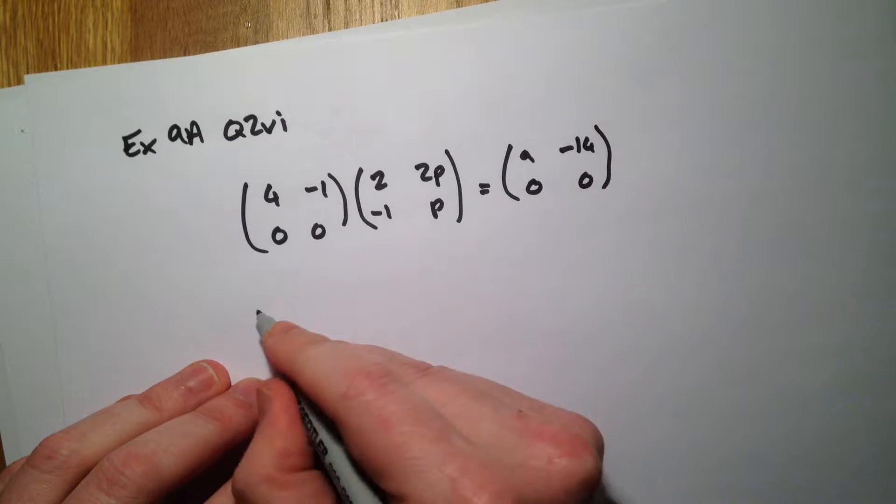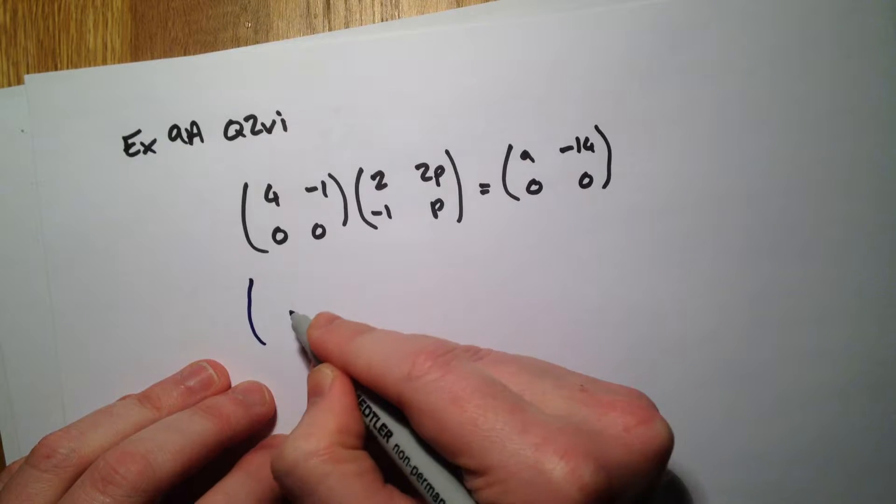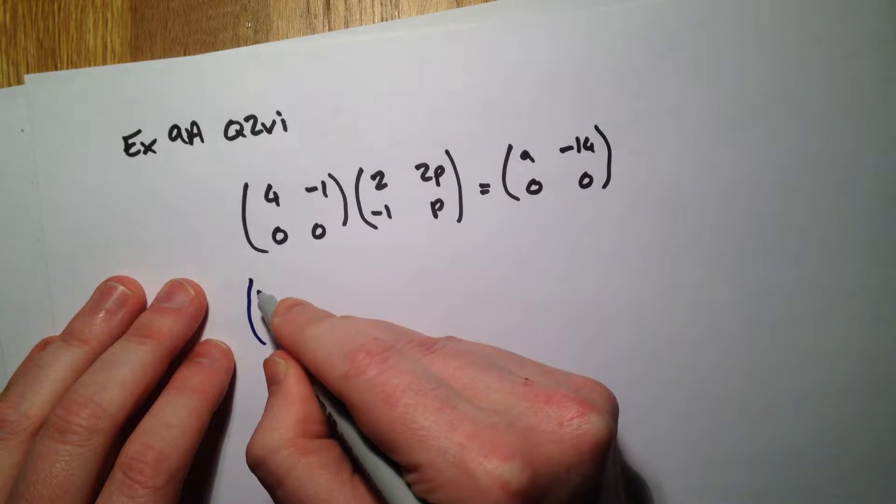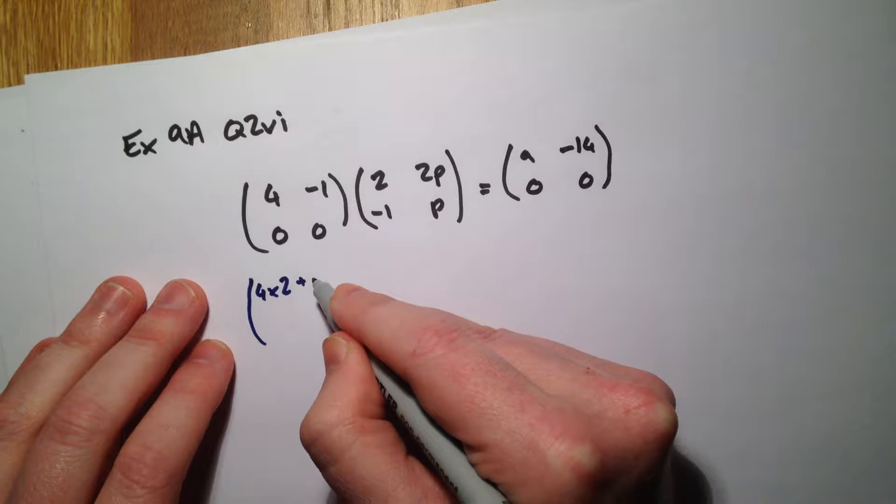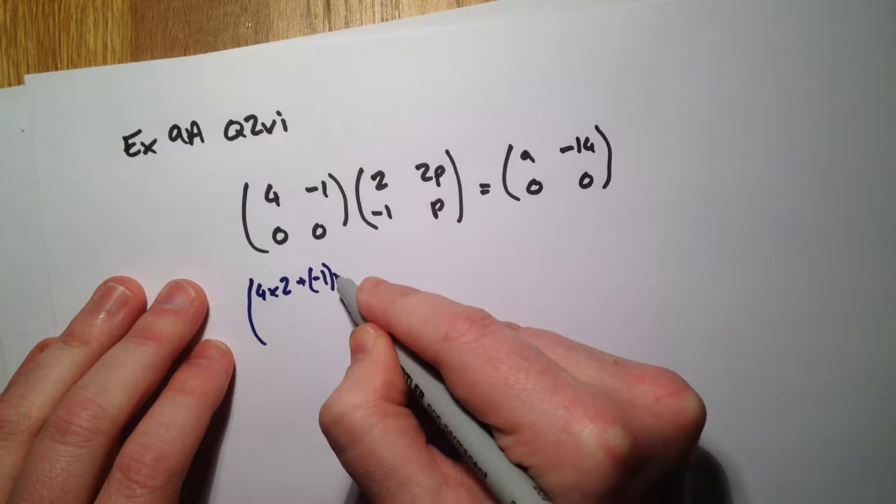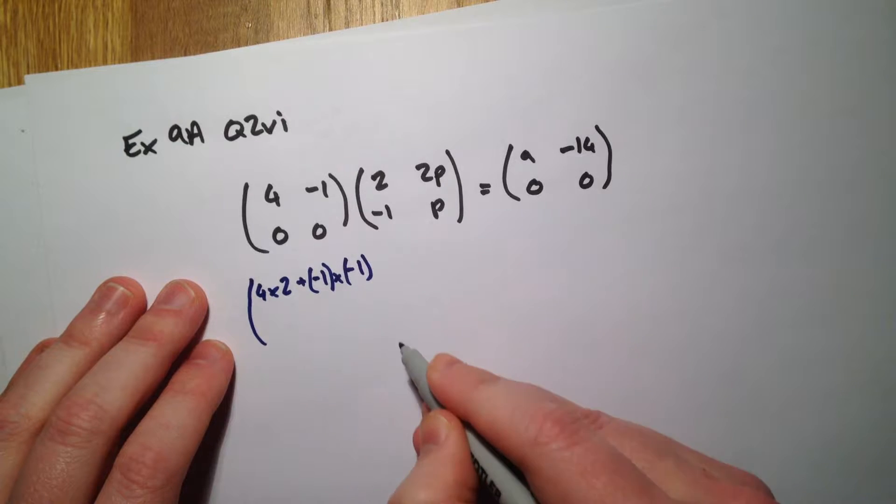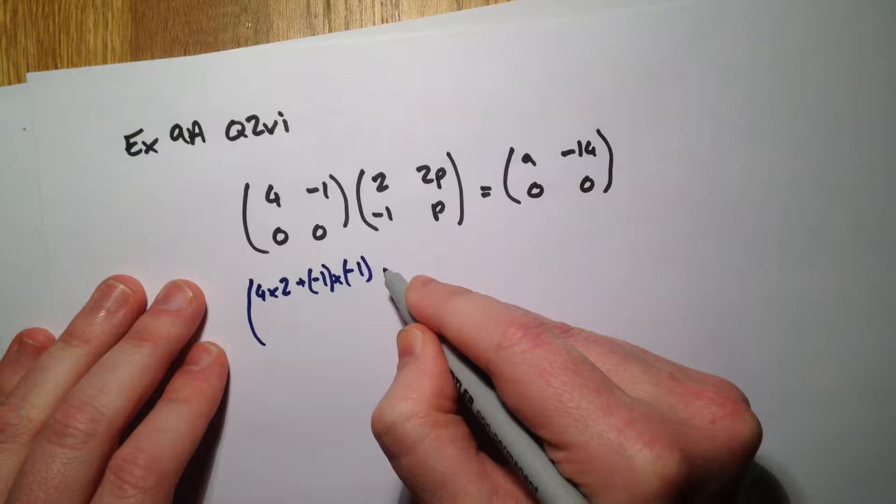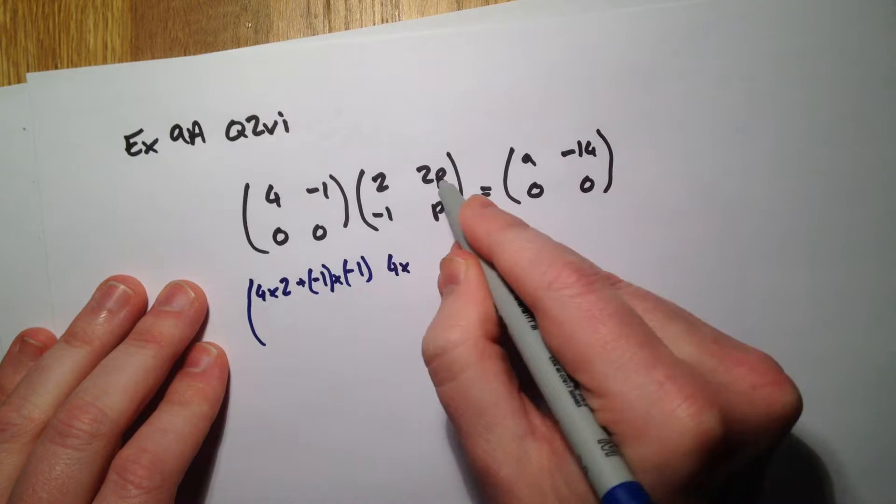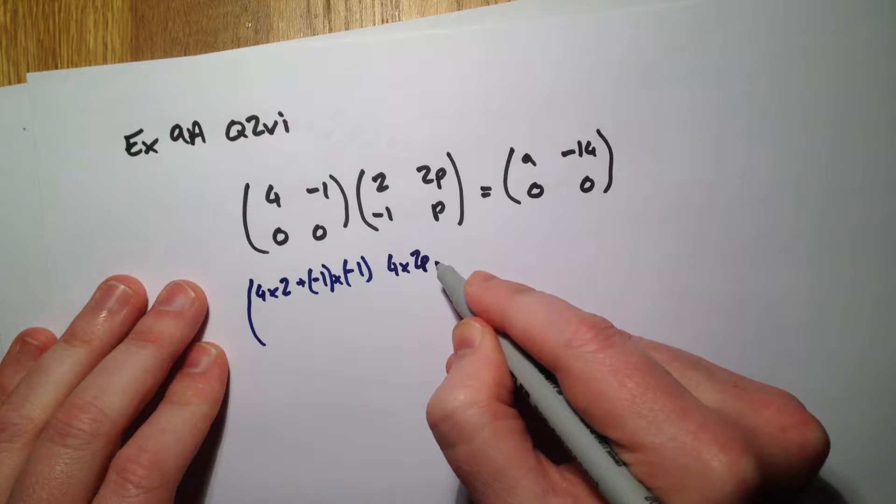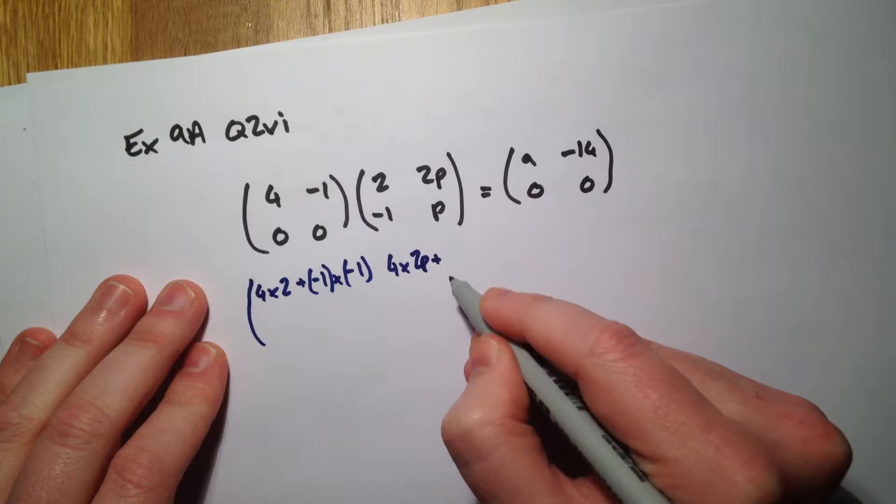Okay, let's do our multiplications. 4 times 2 plus negative 1 times negative 1, and 4 times 2p plus negative 1 times p.